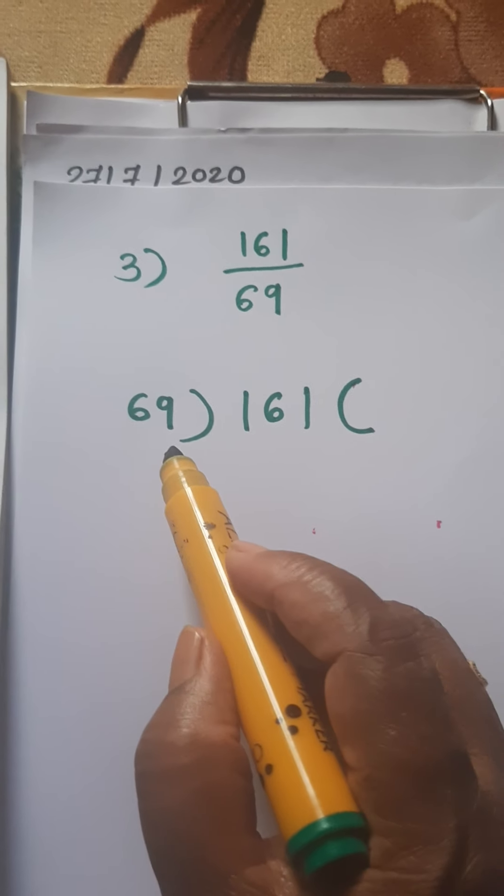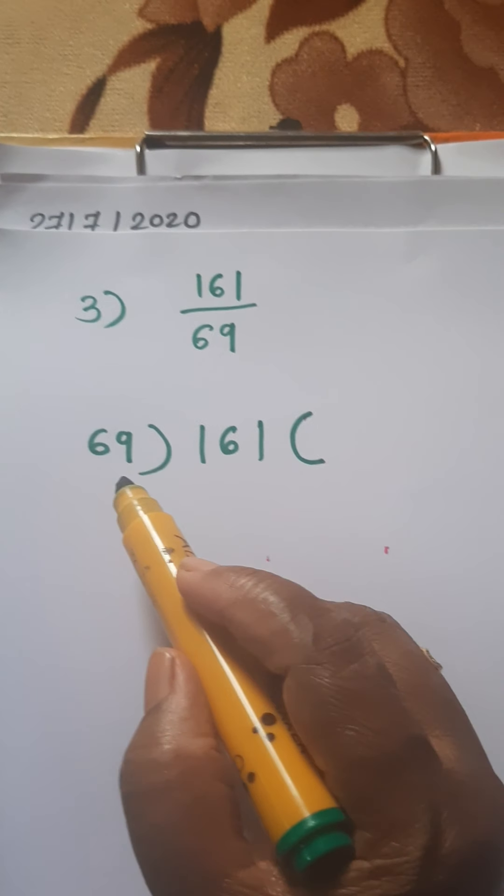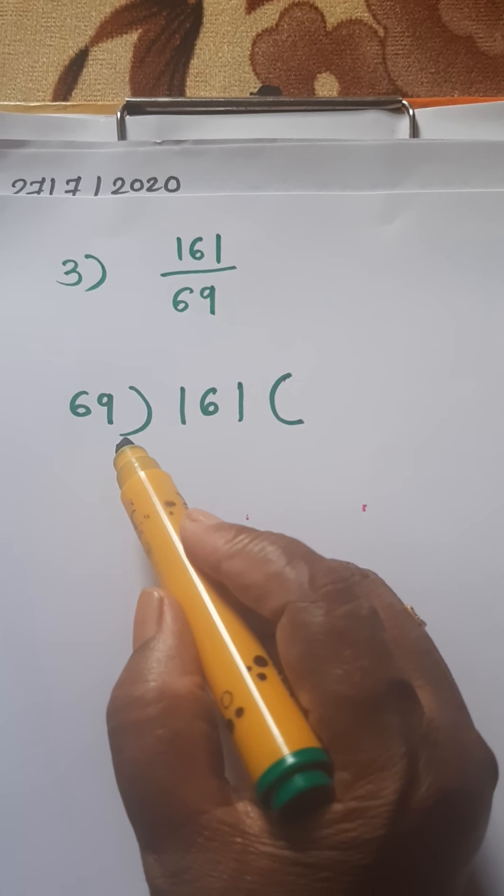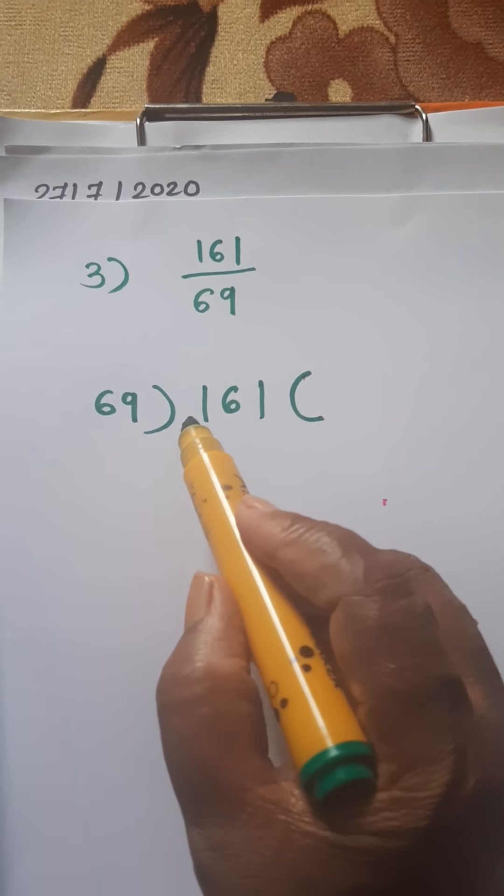So let's see 69's table. 69 ones are 69, 69 twos are 138, 69 threes are 207.